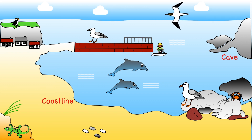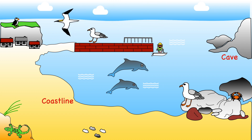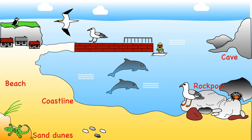A coastline is an area where the land meets the sea. There are many different habitats along the coast including beaches, sand dunes, estuaries, rock pools, cliffs, coves and salty water.